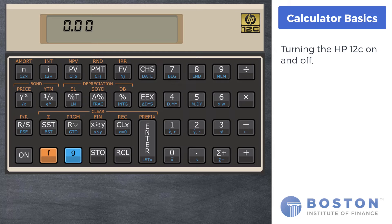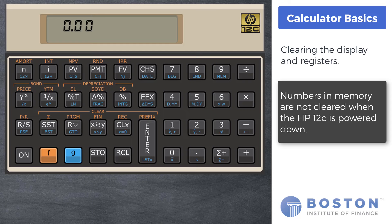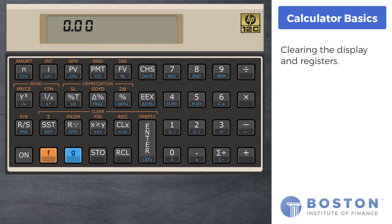Let's start with clearing the display and the more comprehensive clearing the display and registers. More about memory registers in a moment. Numbers that may be stored in the memory registers are not cleared and remain in memory when the calculator is powered down. In order to clear the display, a single key press of the CLX key will do. To clear all the memory registers, press the orange F key followed by the CLX key.